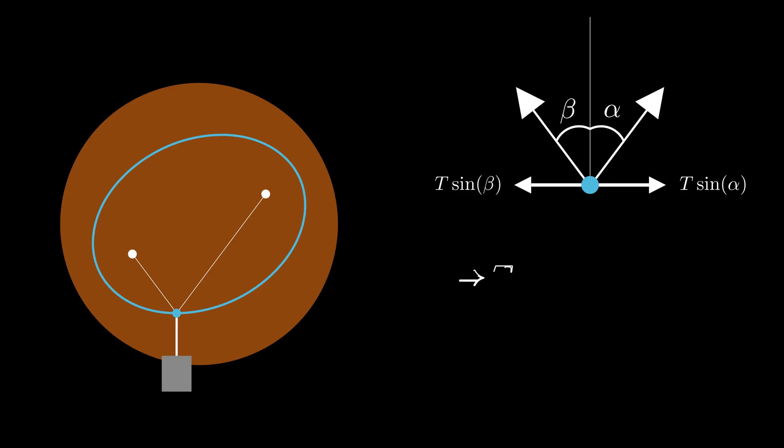So, T sin beta equals T sin alpha. The T's actually cancel, leaving us with the following equation. But from the diagram, it's clear that both alpha and beta lie in the range between 0 and 90 degrees, so we can conclude that alpha must equal beta.